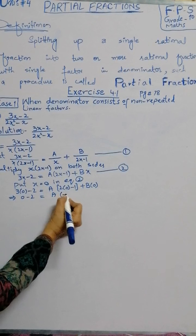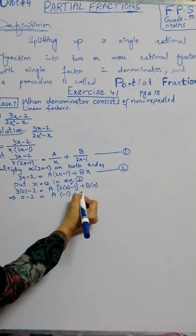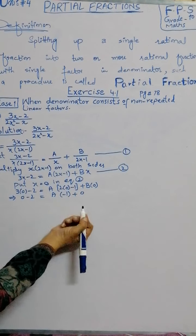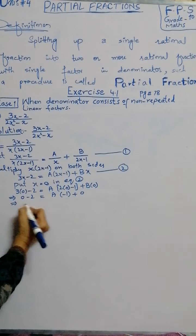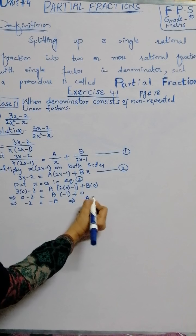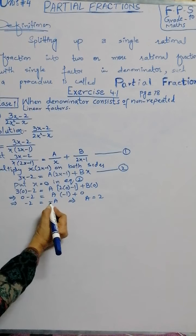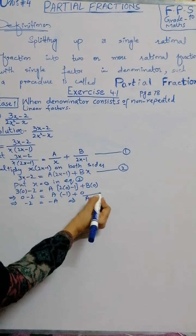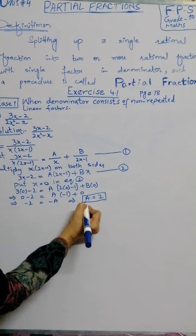Where x is, we write 0. Now we simplify: minus 2 equals minus A, since 2 times 0 is 0 and B times 0 is 0. So minus 2 equals minus A. This implies that A equals 2, because minus and minus cancel. We get the value of A equals 2.